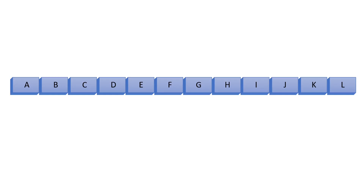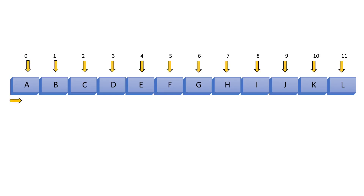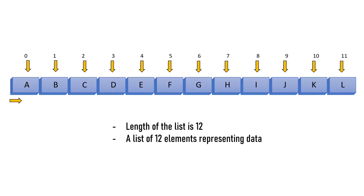Let's start with something simple. Here I have a bunch of data, which could be integers, strings, or any value. In this case, I have letters A through L. This is a linear data structure with 12 values, whose index starts from 0 and ends at 11. If we write them in a list format, the length of the list will be 12 — a list of 12 elements representing a series of data. As you can see, our list in this example has one row and 12 columns.